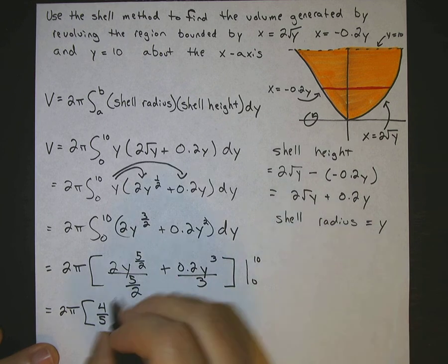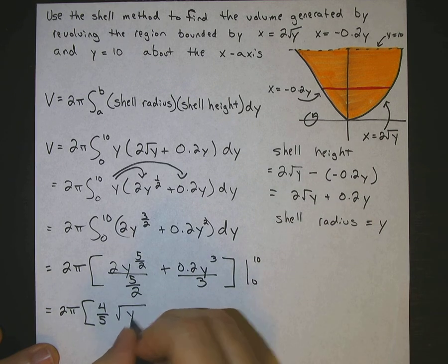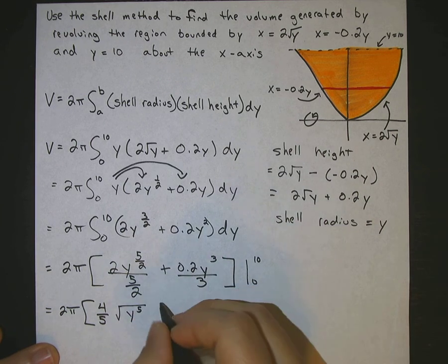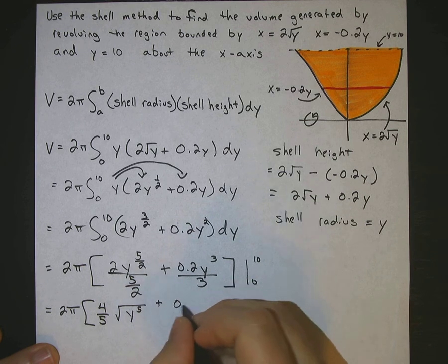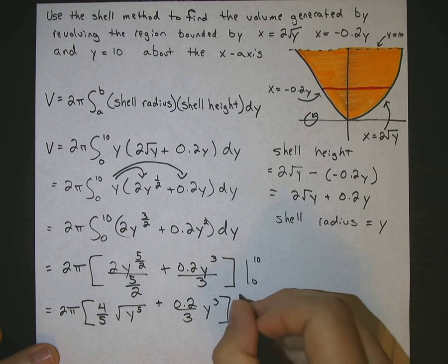Okay, and then we've got the square root of y to the 5th. And then over here, we've got 0.2 over 3y cubed from 0 to 10.